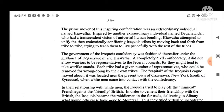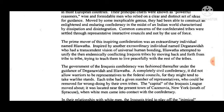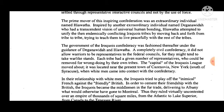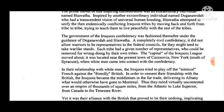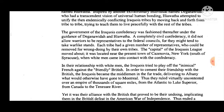Common concerns of the confederated tribes were settled through representative councils, not by use of force. The prime mover of this inspiring confederation was an extraordinary individual named Hiawatha, inspired by another extraordinary individual named Deganawida, who had a transcendent vision of universal human bonding. Hiawatha attended to unify the endemic ally conflicting Iroquois tribes by moving back and forth from tribe to tribe, trying to teach them to live peacefully. The government of the Iroquois confederacy was fashioned under the guidance of Deganawida and Hiawatha.